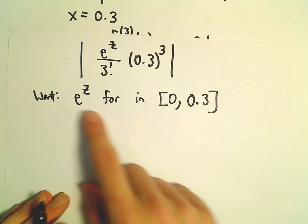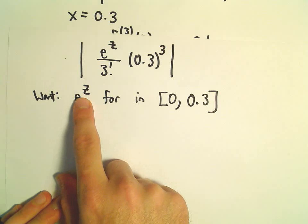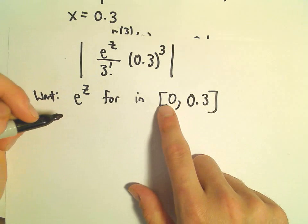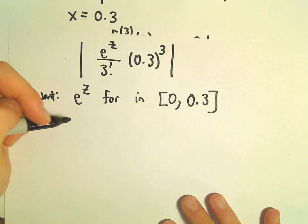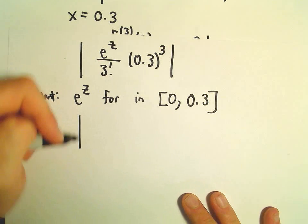Well, to make e to the z as large as possible, e is going to be a larger value when we plug in 0.3. So therefore our error will be at most e to the 0.3.